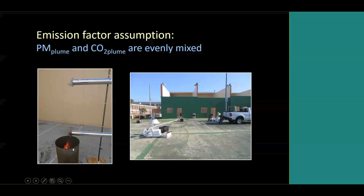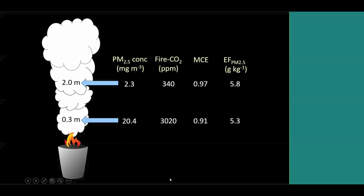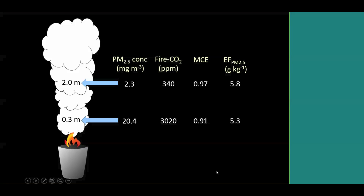Even in this short distance, could there be any differential diffusion or dispersion between the PM and carbon dioxide? The results showed that the concentration of both particulate matter and carbon dioxide was about an order of magnitude lower even less than two meters above the lower sampling location. However, the emission factor was about the same — supporting the idea that, at least over this very short vertical distance, the ratio of PM to carbon dioxide remains constant even as concentration rapidly decreases. As the plume disperses, the modified combustion efficiency is in the same neighborhood.